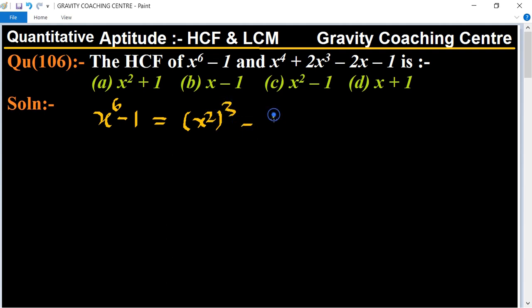And now we use the identity of a cube minus b cube. So its formula is a minus b, and a cube minus b cube, and its formula is a minus b times a square plus ab plus b square.